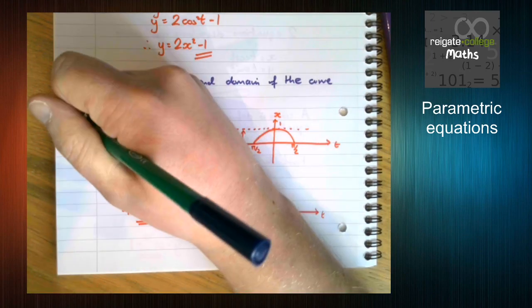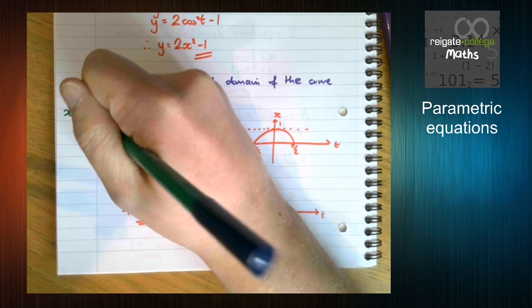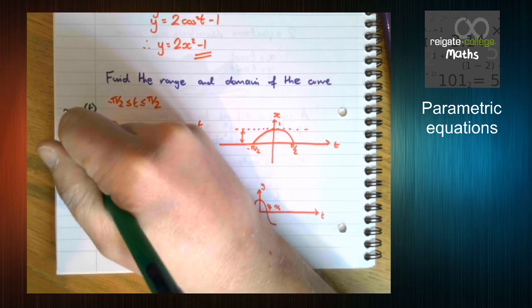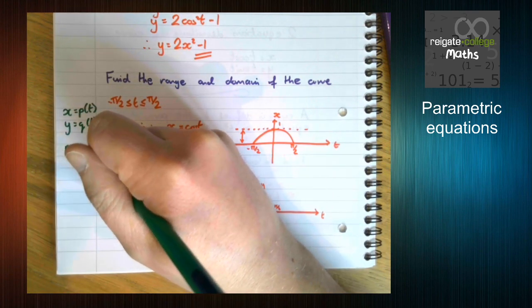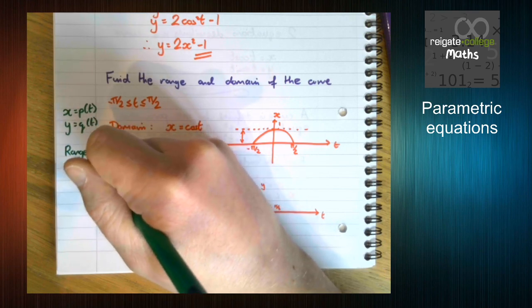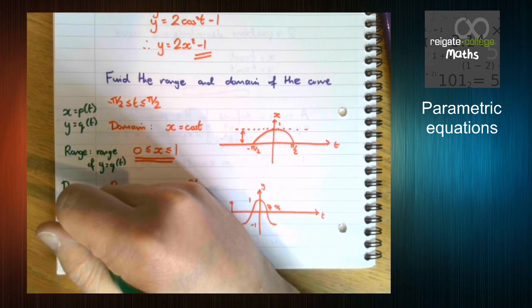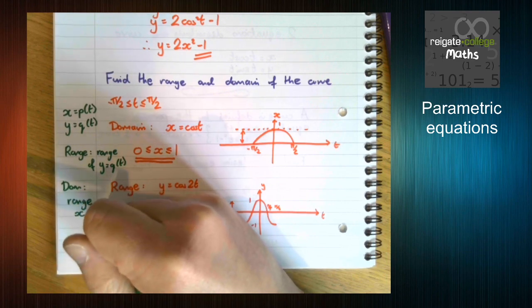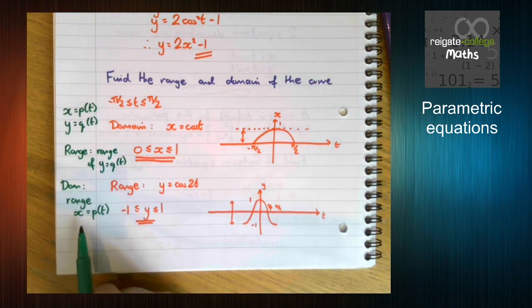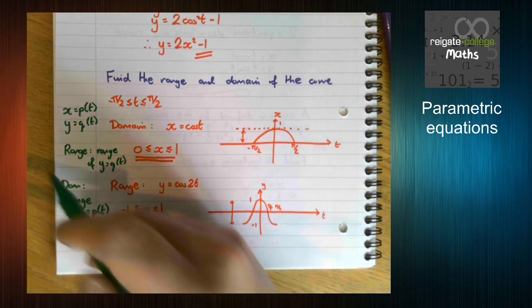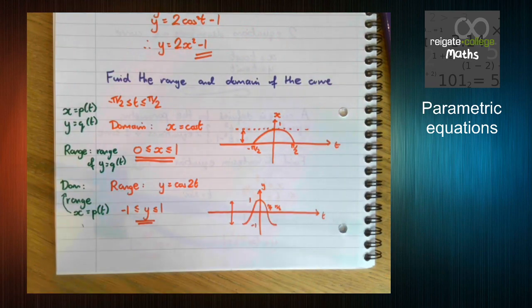So in general, if x is p of t and y is q of t, the range of the whole function is the range of y equals q of t. And the domain is the range of x equals p of t. And this is the thing that confuses a lot of people, is we're talking about range, but we've got x's. That's because it's the range of this little function. Really, the letters here don't hugely matter other than it's x, which means eventually it's going to give us the domain of the original function.